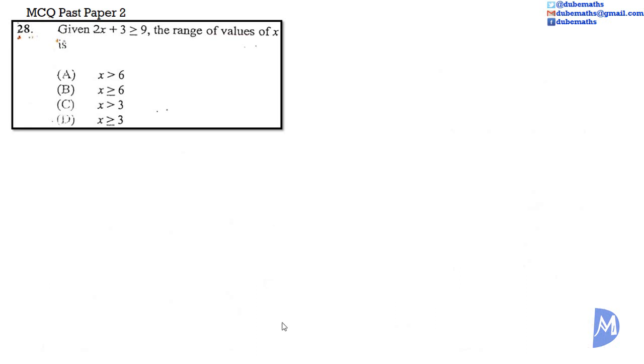Now, we want to solve the inequality 2x + 3 is greater than or equal to 9. We are going to remove the 3, then the 2 on the left-hand side. Add a negative 3 to both sides. 3 subtract 3 is equal to 0. So we get 2x.